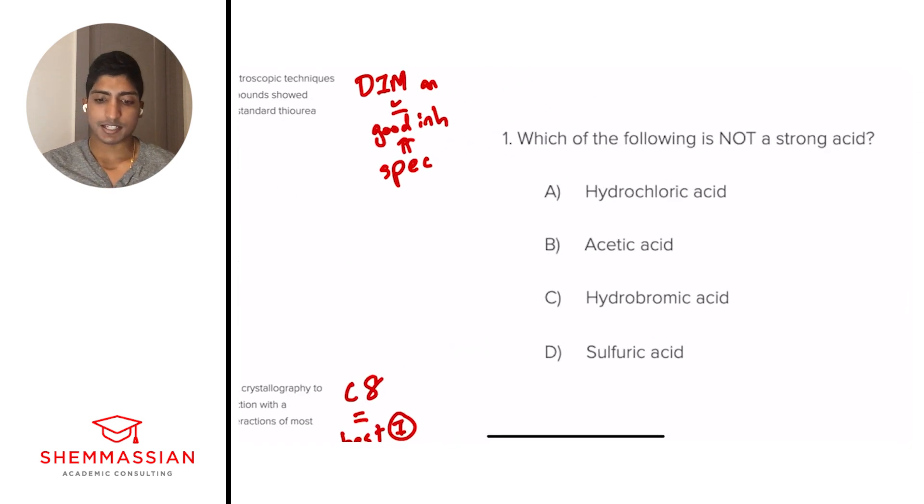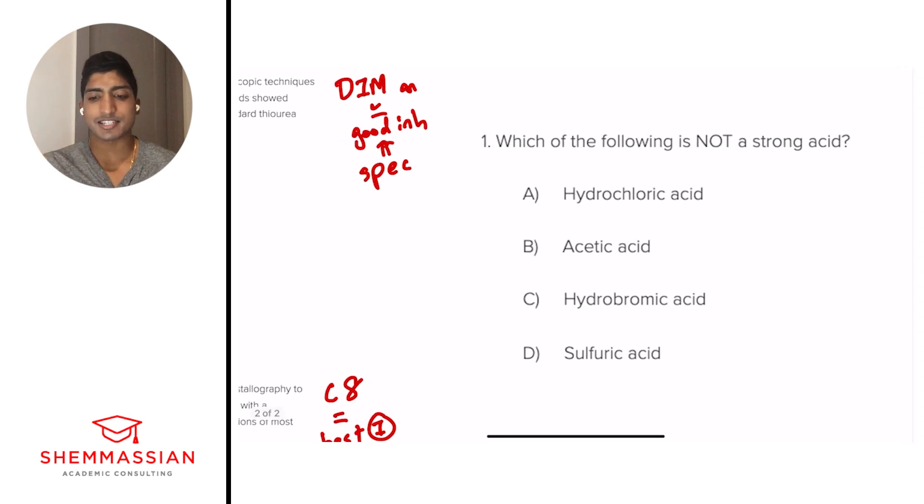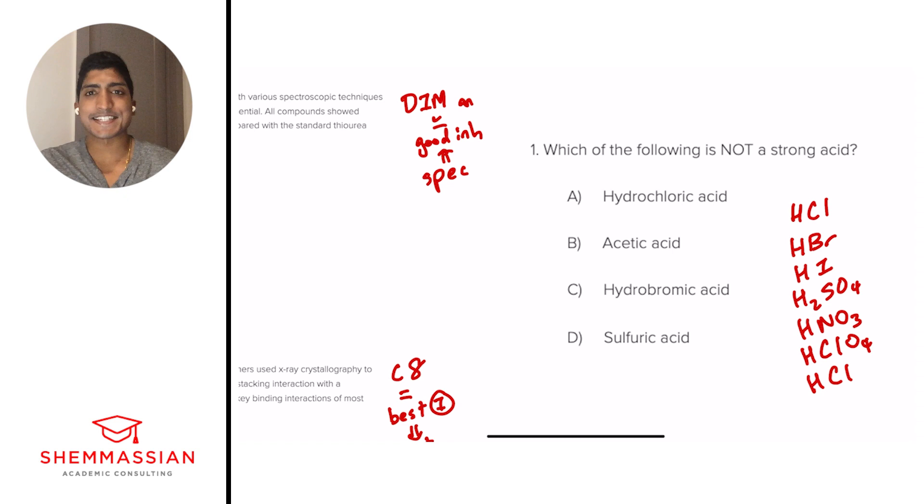Which of the following is not a strong acid? Is it A, hydrochloric acid, B, acetic acid, C, hydrobromic acid, or D, sulfuric acid? So this is a standalone question, meaning we don't have to go back into the passage for it. But that requires us to have some baseline understanding from our content review phases. And you'll note that there are a list of strong acids that we got to remember. First, we have hydrochloric acid. Then we have hydrobromic acid. We have hydroiodic acid. We have sulfuric acid. We have nitric acid, perchloric acid, and chloric acid. And these are our strong acids.